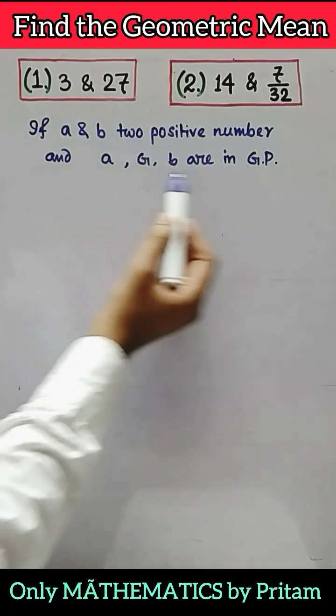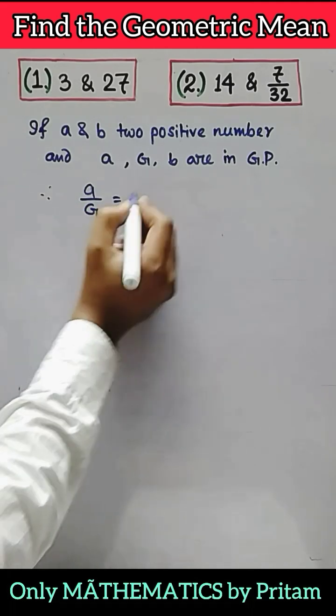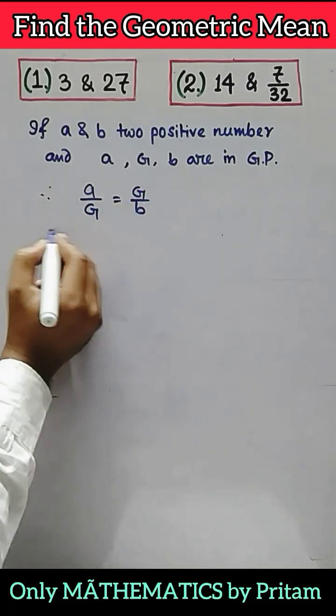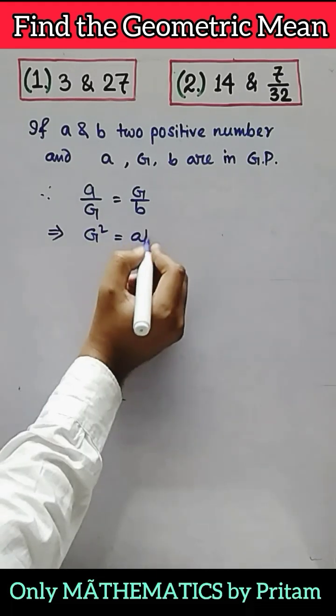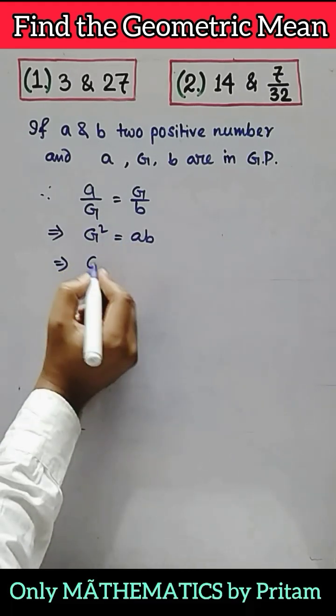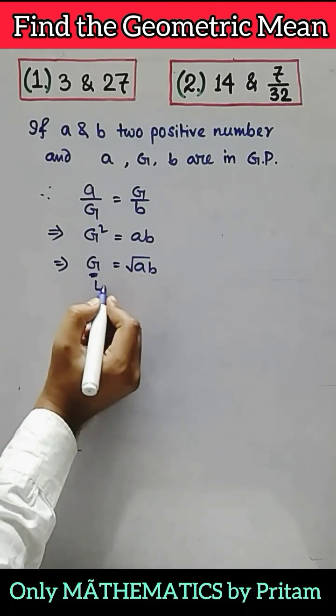If a and b are two positive integers and a, G, b are in geometric progression (GP), we can write a/G = G/b. Cross multiplication gives G² = ab, so G = √(ab). This G is called the geometric mean between a and b.